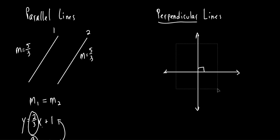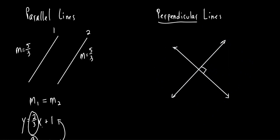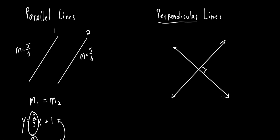Now there is a relationship between the slopes of perpendicular lines — they're not equal. Look: one slope goes up from left to right, so it's positive. The other goes down from left to right, so it's negative. On perpendicular lines, one slope is going to be positive and the other is going to be negative.